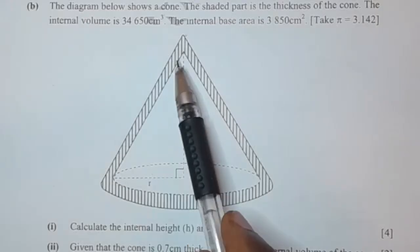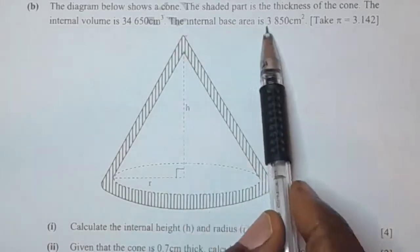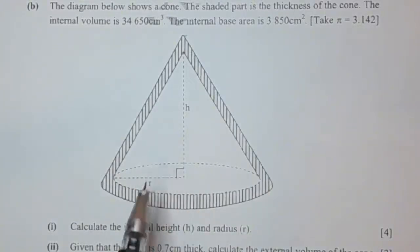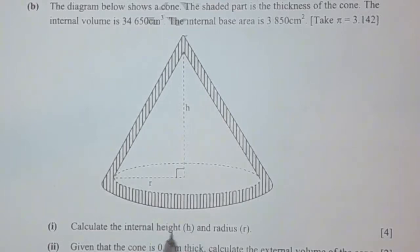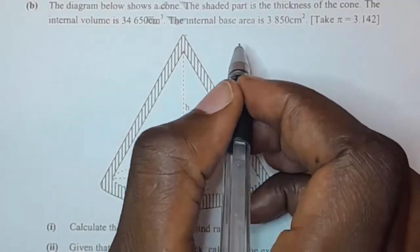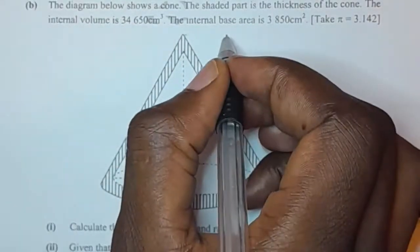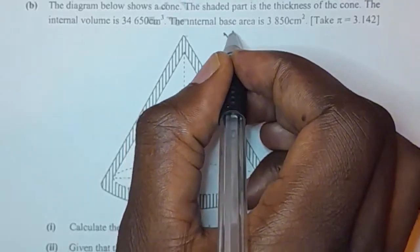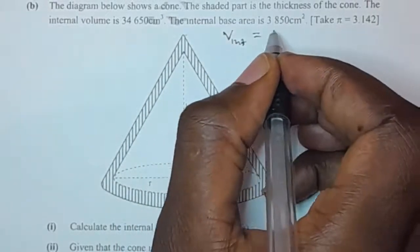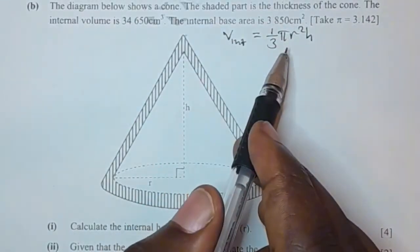The information we've been given is the internal volume of a cone and also the internal base area. To find the height and the radius, since we've been given the volume, we're going to write the formula for the volume of a cone. So the internal volume is equal to one-third pi r squared h. This is the formula for the volume of a cone.